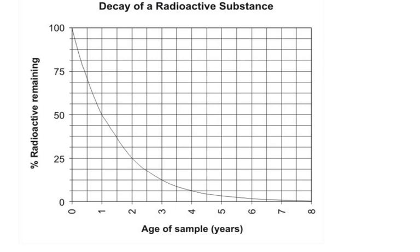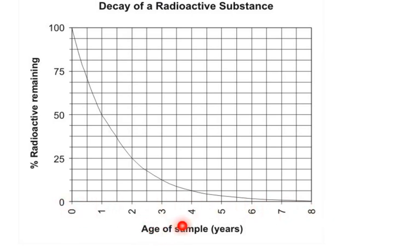In an exam you might be presented with a graph that looks a bit like this. It might have the number of atoms here, or it could have something called count rate here. We're going to have some numbers going down on the y-axis, and time going along on the x-axis. You need to look at what the units are — years, days, hours, minutes.